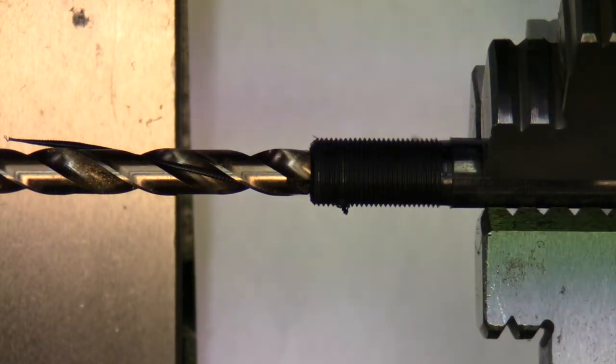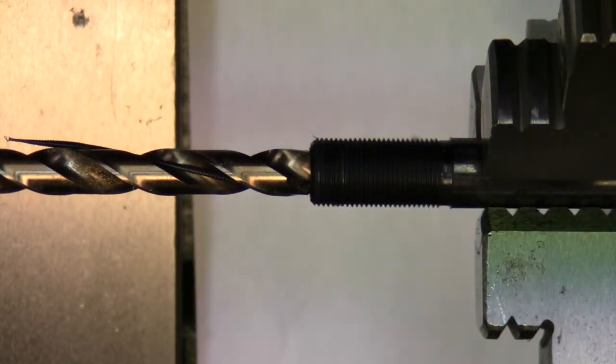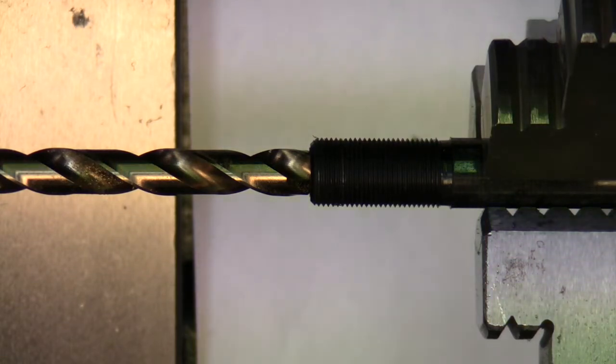Now we want to go in 1.2 inches. So on this lathe, this is a Grizzly 4002 lathe, that's a 12 by 24 lathe. My tailstock, one full turn on the handle goes in a tenth of an inch. Now I've got another little Grizzly lathe, it's an 11 by 26, and one turn of the handle is sixty thousandths. So you would have to go in twenty times to go 1.2 inches. On this, I'll go in twelve turns.